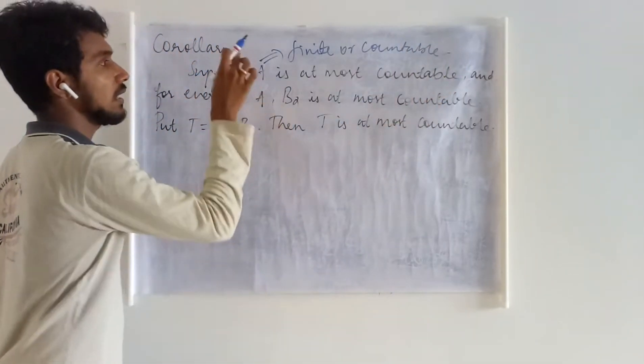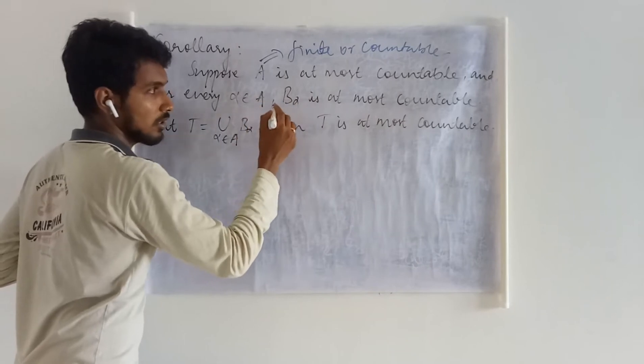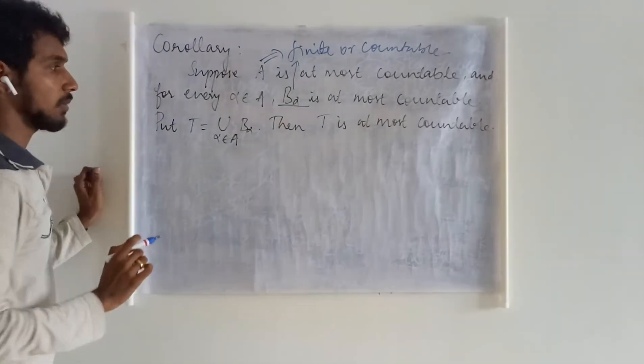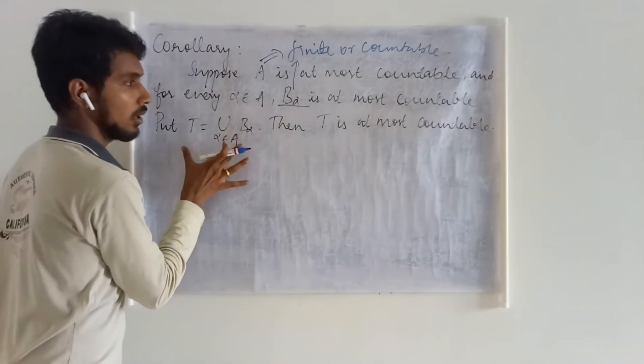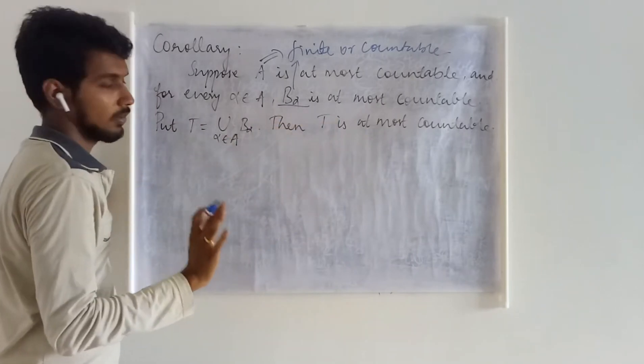For each element of this A, you are associating some at most countable set. So all your V_A is also under the same category, and you are just making a union of these things, and you have to prove this union is at most countable.